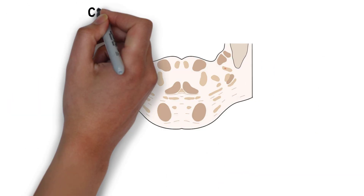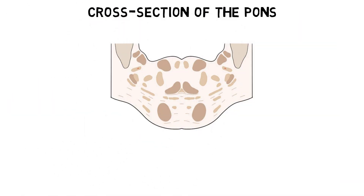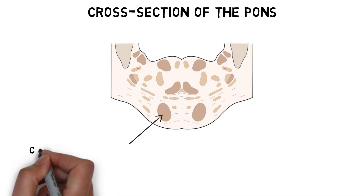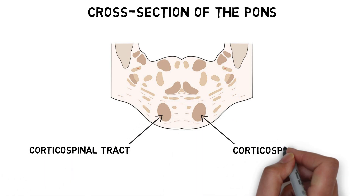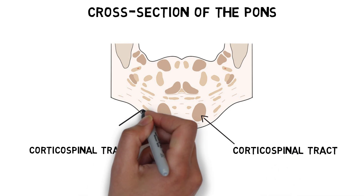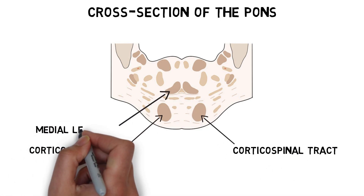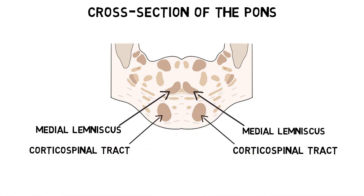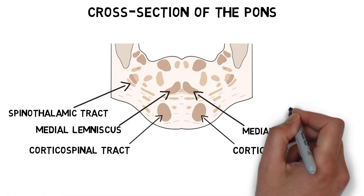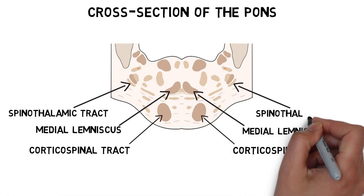The pons also serves as a conduit for many tracts passing up and down through the brain stem, like the corticospinal tract for voluntary movement, the medial lemniscus for tactile and proprioceptive sensations, and the spinothalamic tract for pain and temperature sensations.